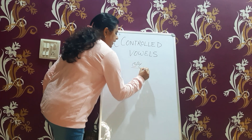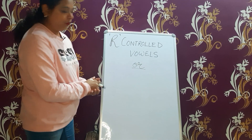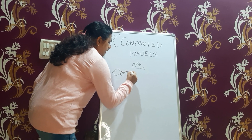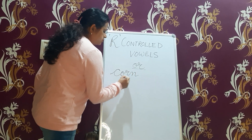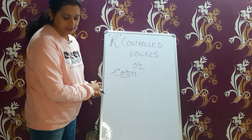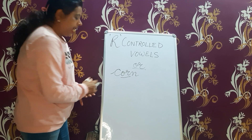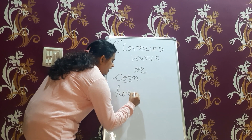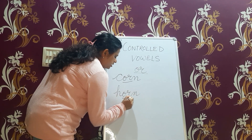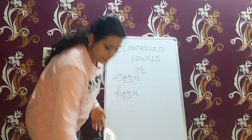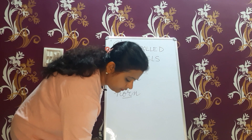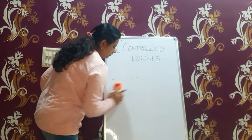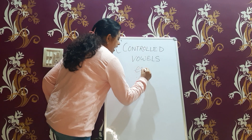When R follows the vowel O: O-C-O-R-N is pronounced as 'corn'. Next, H-O-R-N is pronounced as 'horn'. Same pattern applies when R follows the vowel E — E-R.